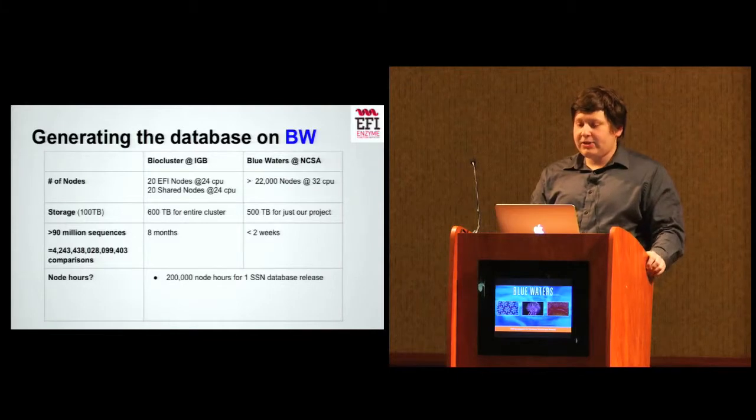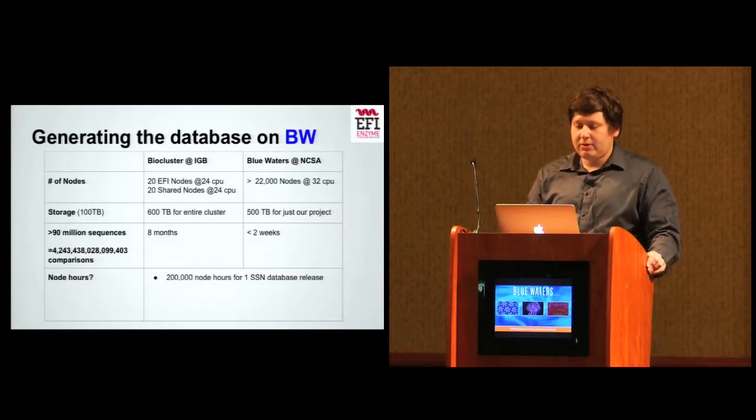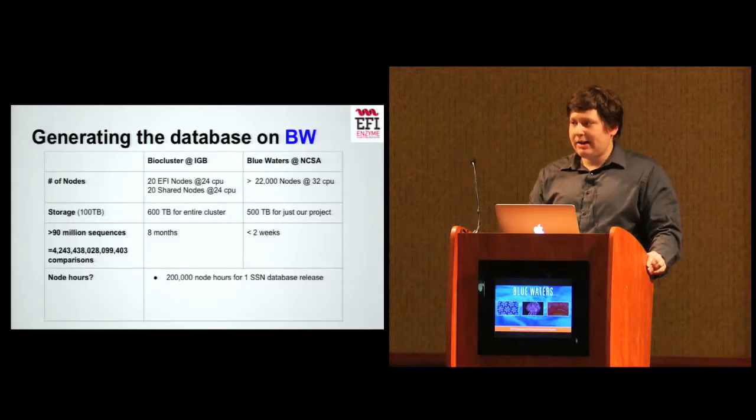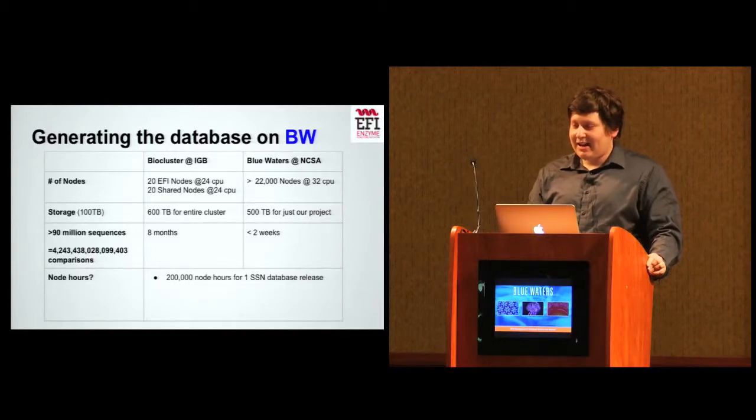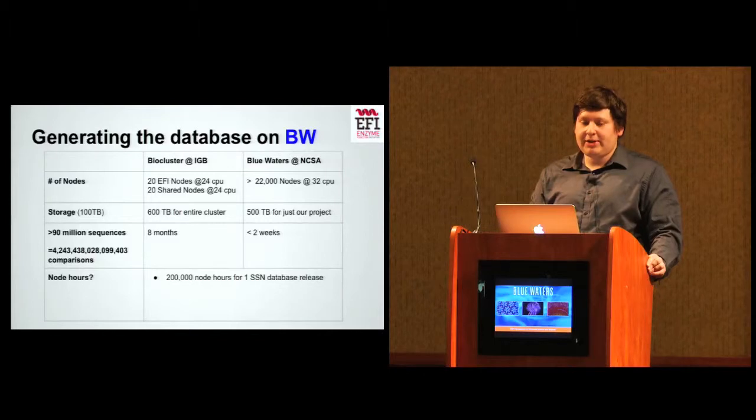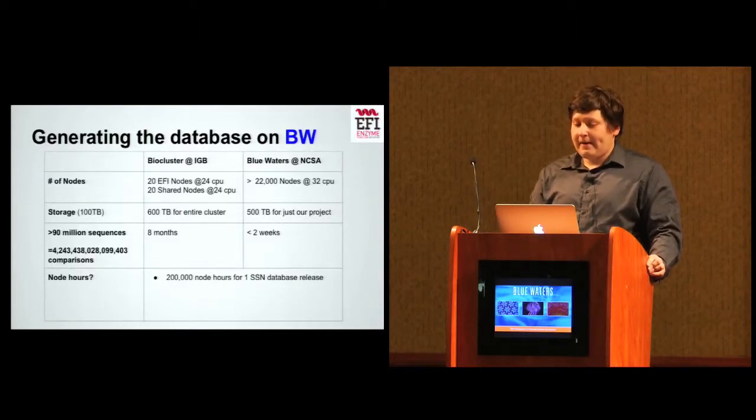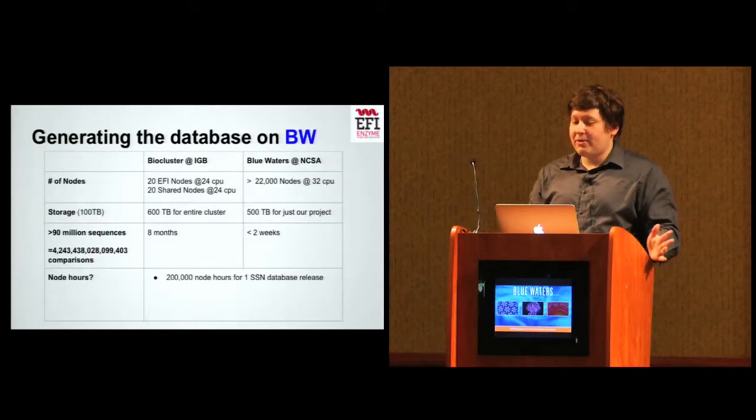If we wanted to generate this database on our cluster, we've got 20 nodes in our cluster on just our queue, and there's another 20 shared nodes that the entire institute uses versus we have access to over 22,000 nodes at Blue Waters. The intermediary storage for our pipeline is around 100 terabytes. There's only around 600 terabytes for the entire cluster, and we get 500 terabytes just for our project at Blue Waters.